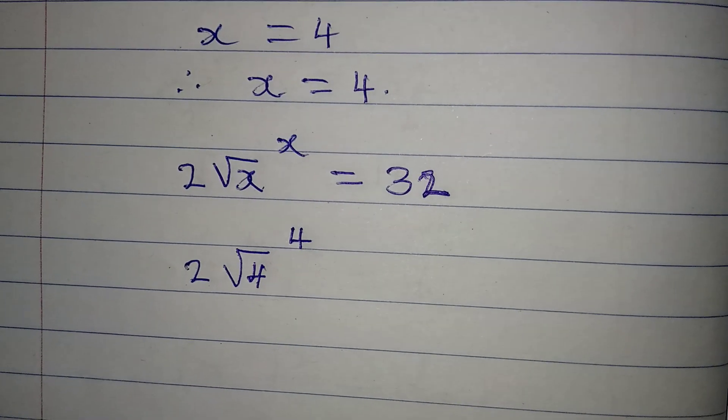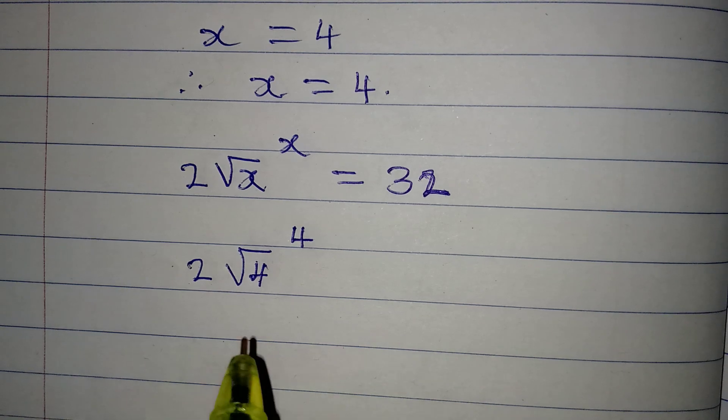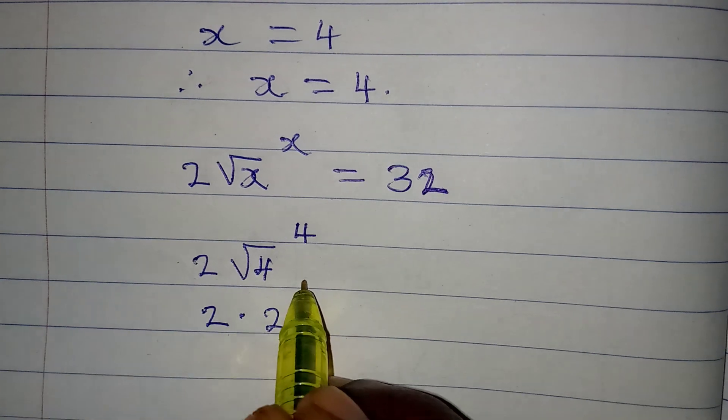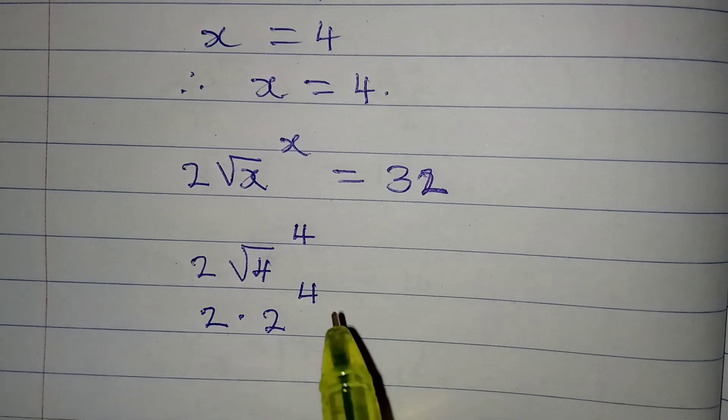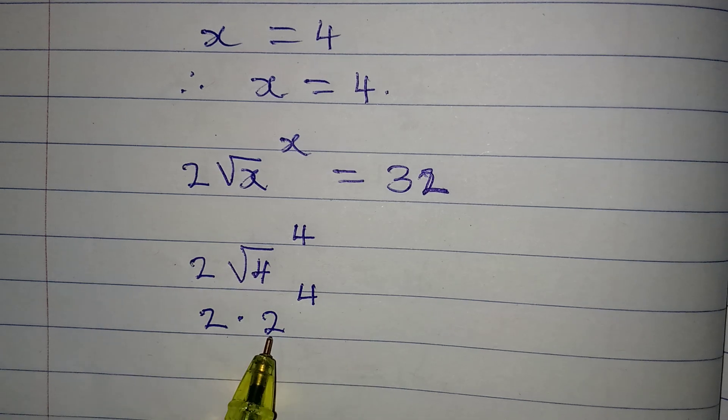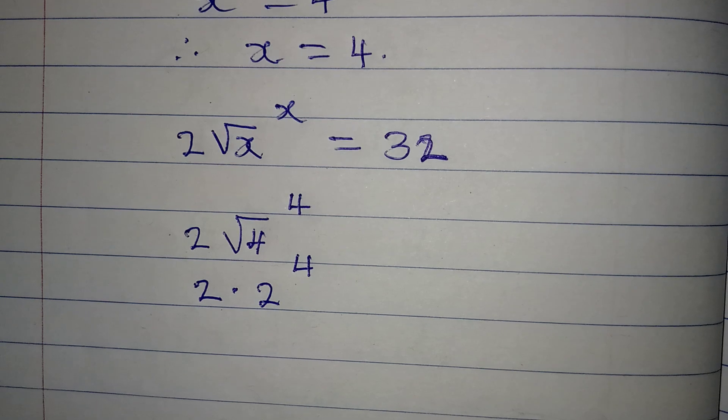Right, will this give us our 32? Let's continue to work it. This will be 2 times 2 to the power of 4, because square root of 4 is 2, right. So that is what we have.